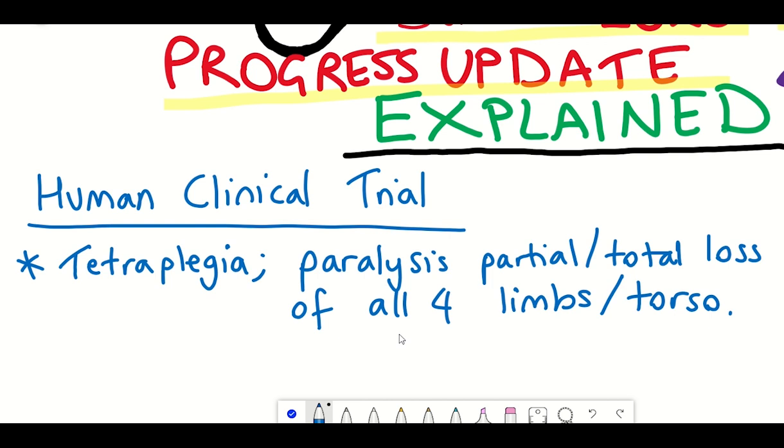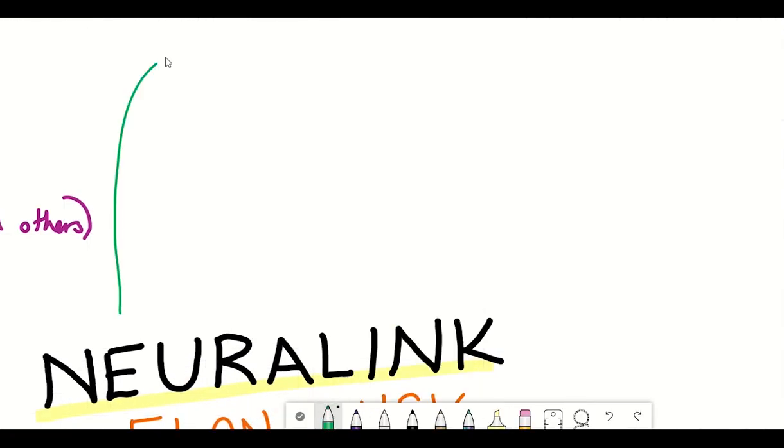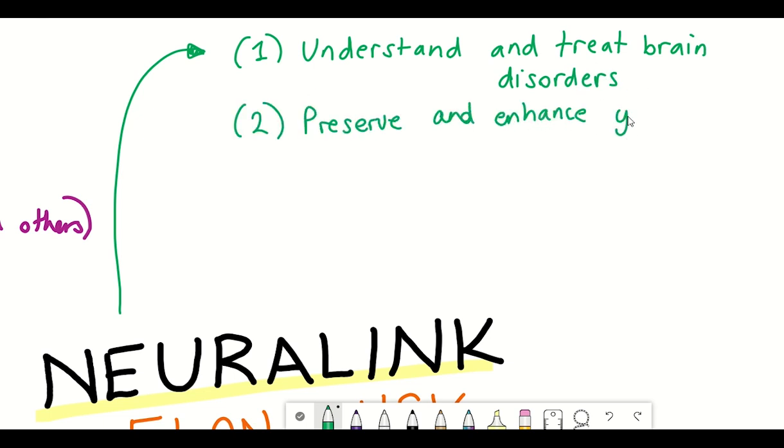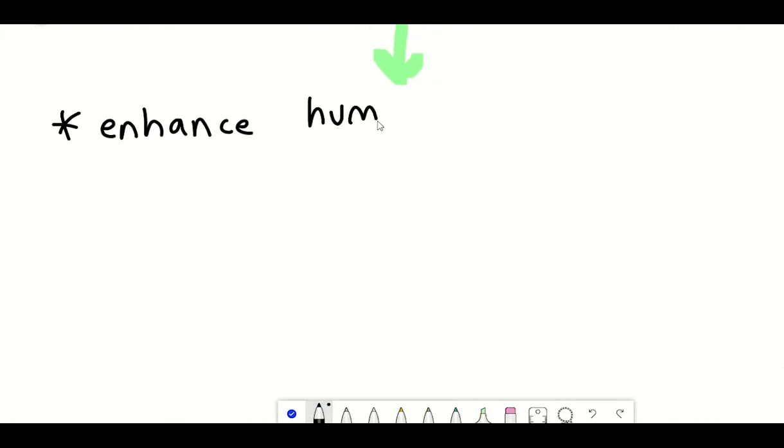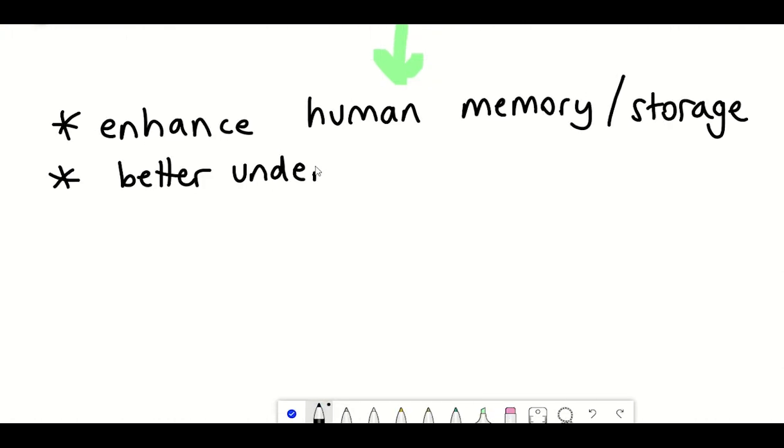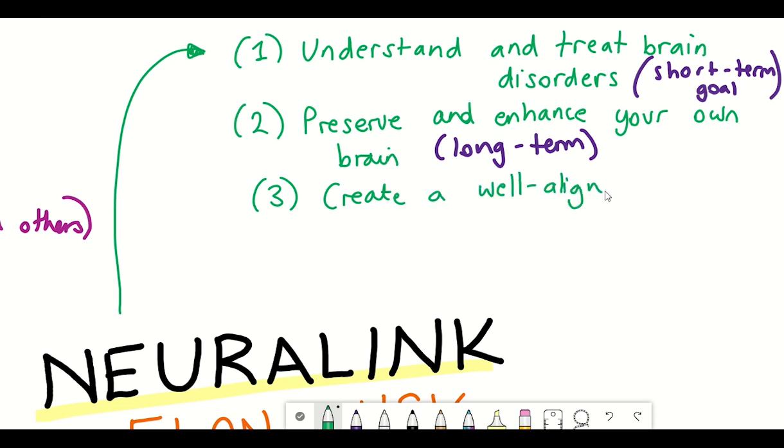So the short term goal of Neuralink is to be able to treat these different neurological disorders. But what about the long term potential of Neuralink? Well, one of Elon's visions is to eventually, as a long term goal, be able to preserve and enhance your own brain, including examples such as being able to record and store your memories, being able to better understand consciousness and to have superhuman vision and telepathy. And the idea is he would like to create a well-aligned future whereby there's full brain machine interface and symbiosis with artificial intelligence.